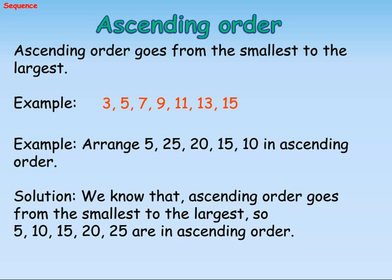Example. Arrange 5, 25, 20, 15, 10 in ascending order. Solution. We know that ascending order goes from the smallest to the largest. So, 5, 10, 15, 20, 25 are in ascending order.